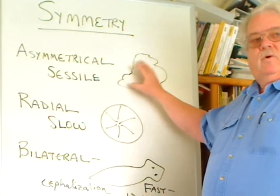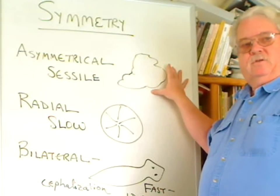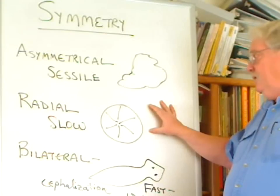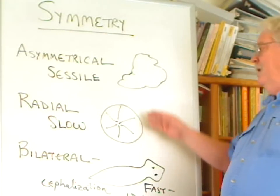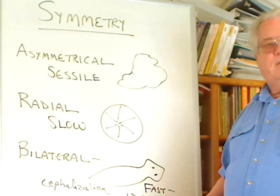Now, asymmetrical organisms primarily, we're looking at sponges. Radial symmetry, the Cnidarians, and then way on down the line, the Echinoderms.